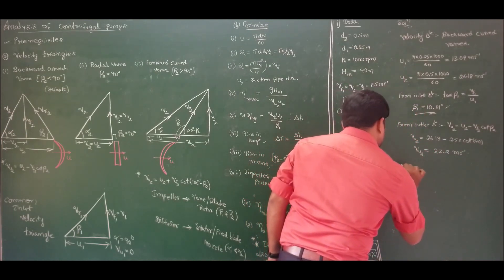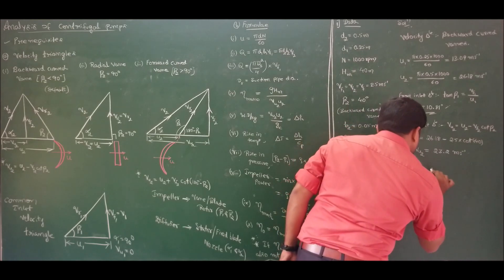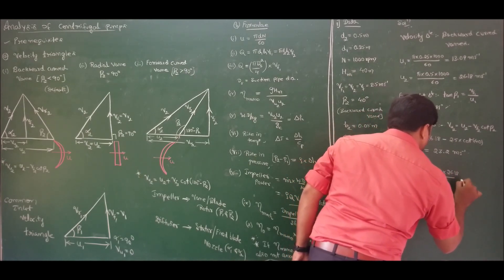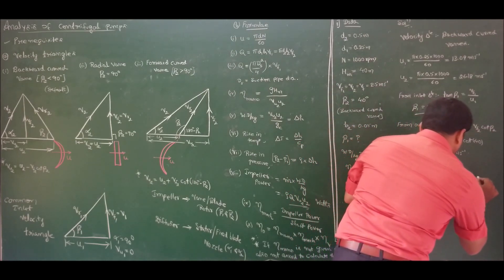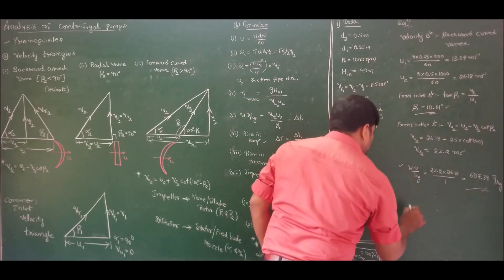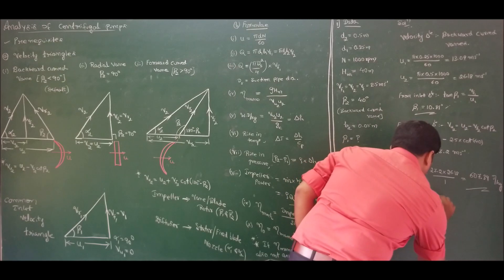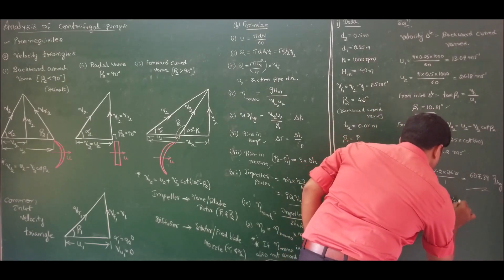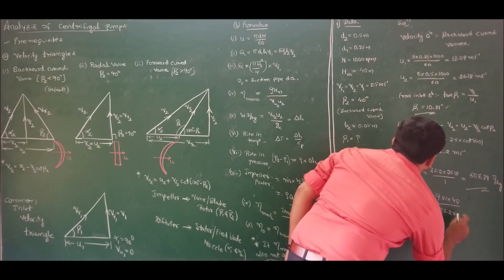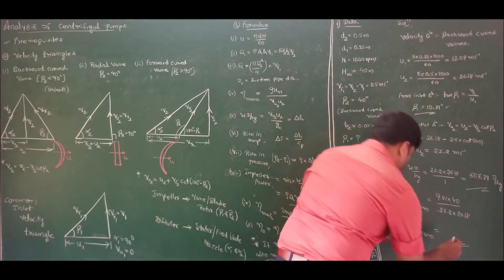Therefore work done per kg equals Vu2·U2 = 23.2 × 26.18 = 607.39 joules per kg. Next, we calculate manometric efficiency. Manometric efficiency = g·Hm / (Vu2·U2) = 9.81 × 40 / (23.2 × 26.18) = 392.4 / 607.39 = 64.6%.